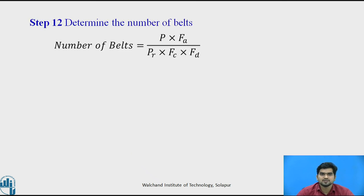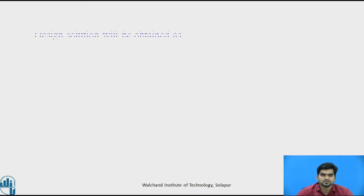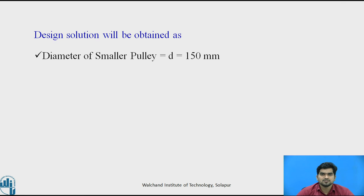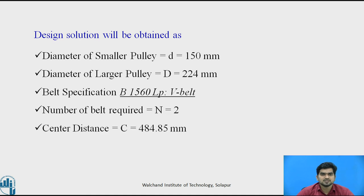Knowing the power rating, we calculate the number of belts using the equation: N equals P times FA divided by PR times FC times fd. Substituting the values, we get 1.59, and rounding up to the nearest whole number, the number of belts required is 2. The final design solution is: diameter of smaller pulley d equals 150 mm, diameter of larger pulley D equals 224 mm, belt specification B1560LP V-belt, number of belts required is 2, and center distance c equals 484.85 mm.